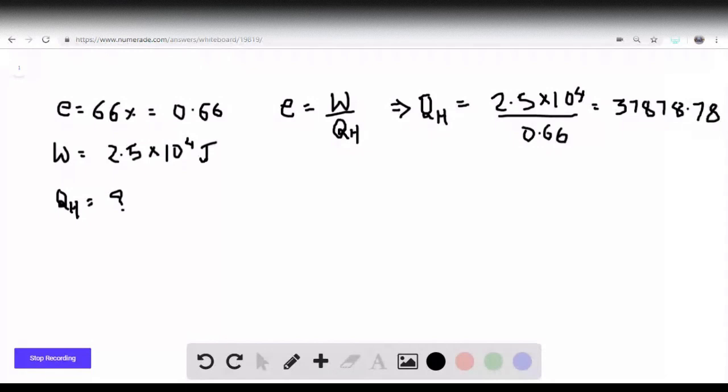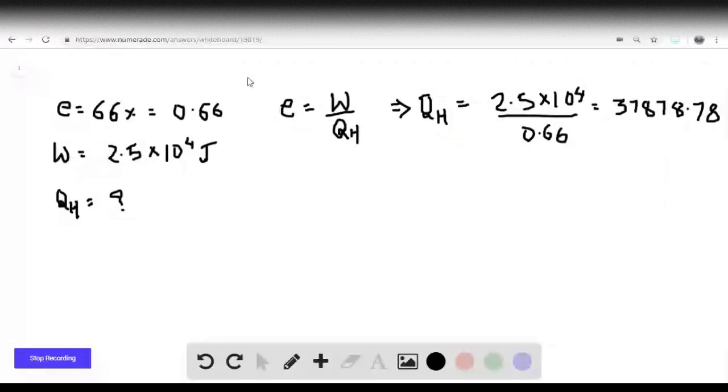All right, so we are done with the first part, that is (a). Now question (b) says the engine exhausts heat at room temperature, so the exhaust means that is the cold reservoir Tc, that is equal to 20 degrees Celsius.